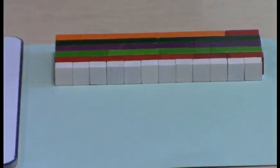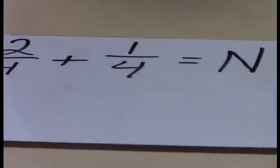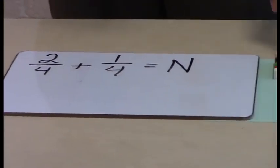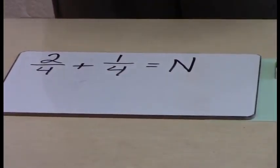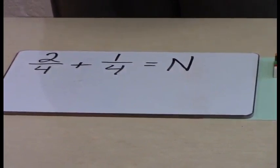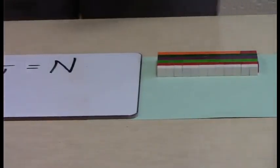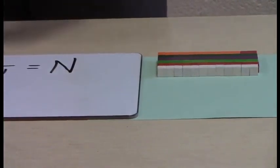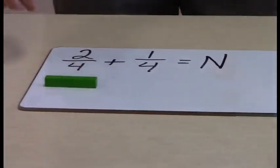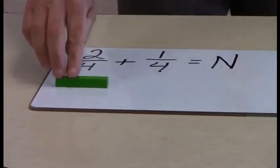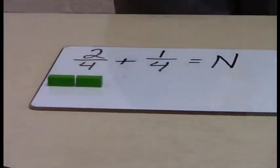So coming back to the problem of two fourths plus one fourth, I asked the students what is equivalent to the fourths, and in the color train they identify that the light greens are equivalent to the fourths because four light greens are equal to one whole piece being the orange plus the red. So what I have them do is take an equivalent form. They're going to say two fourths, well that would be equivalent to one two light greens.